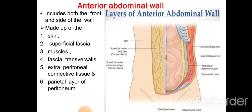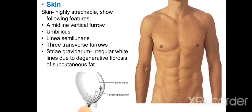The layers of the anterior abdominal wall from front to back are: skin, superficial fascia, muscles, fascia transversalis, extraperitoneal connective tissue, and parietal peritoneum. The skin is highly stretchable in the abdomen and presents the midline vertical furrow, linea alba, linea semilunaris, three transverse furrows, and striae gravidarum.